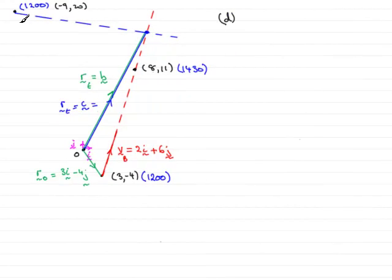Now, in part D, we already know that the velocity of C was 6 units in the I direction.